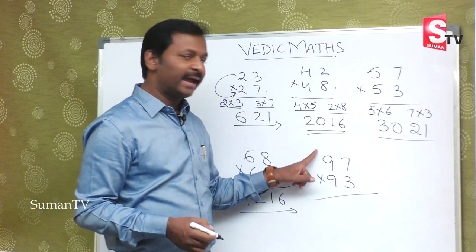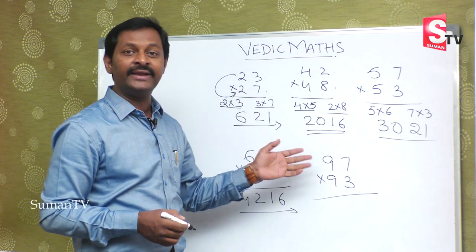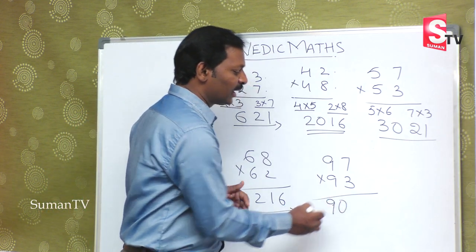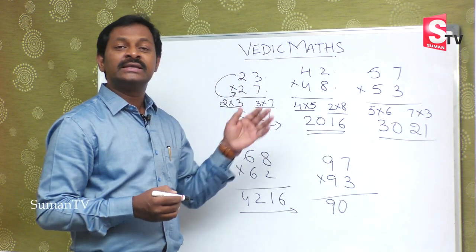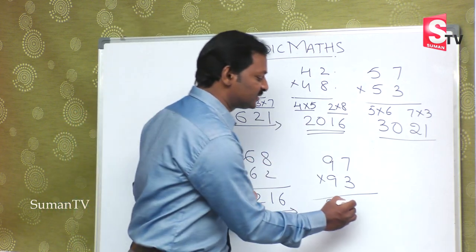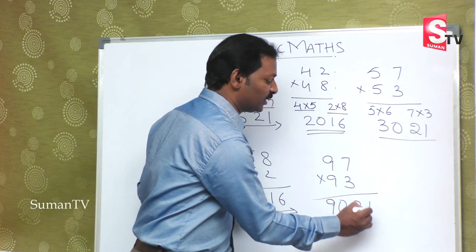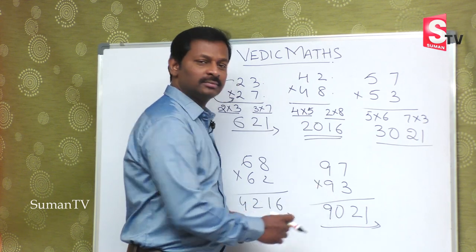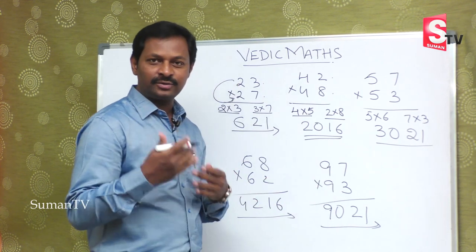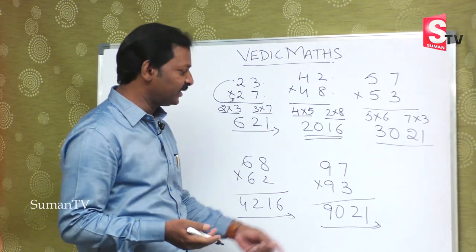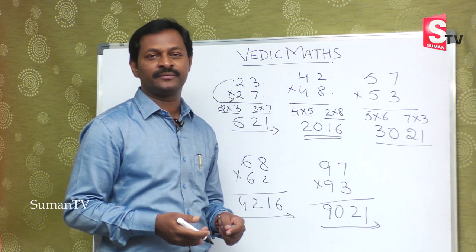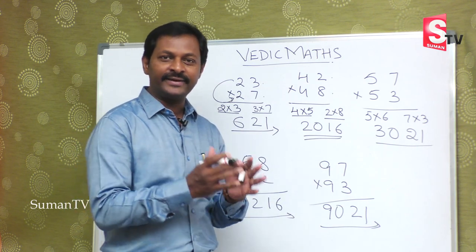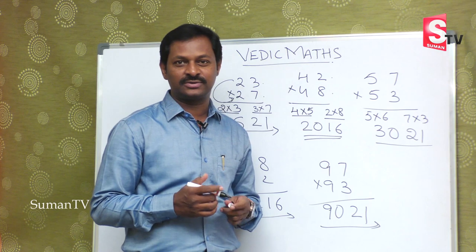One more number: 9 and 9 is given, so 9 into 10 is 90 and the right side is 7 and 3. 7 into 3 is 21. This is the process. So 9 into 10 is 90 and 7 into 3 is 21. If we know this, we can do the direct multiplication.